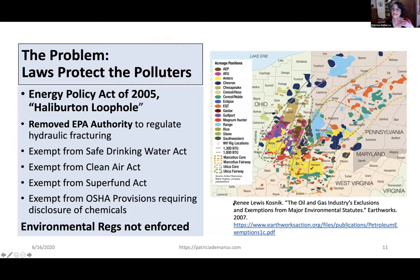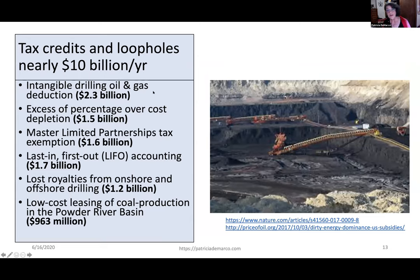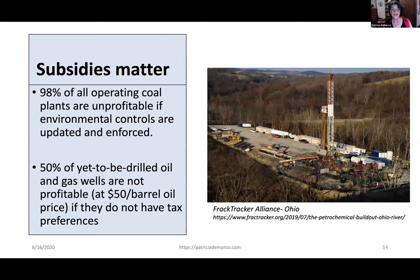Under this administration even the regulations that do pertain are not being enforced. Under the COVID crisis they have suspended enforcement, and you can see the number of facilities in our area that are receiving exemptions from environmental protections designed to protect the health and safety of the community and workers. The people who profit from this industry have been heavily weighted with subsidies for the oil, gas, and coal industries — including nearly 10 billion dollars per year in indirect subsidies through tax treatments, reductions, royalties, and low-cost operations using federal land to promulgate the use of these extractive industries.